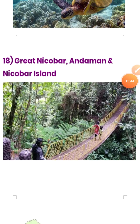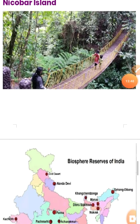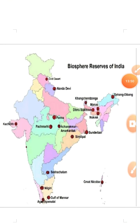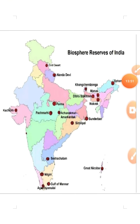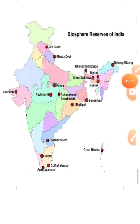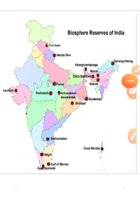The eighteenth biosphere reserve is Great Nicobar in the Andaman and Nicobar Islands. This completes the location of all 18 biosphere reserves across India, and concludes the chapter on Natural Vegetation and Wildlife. Thank you.